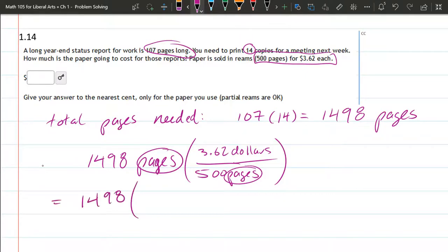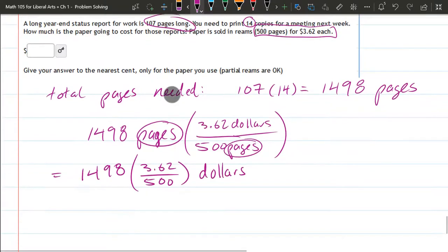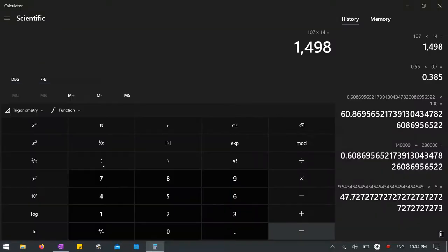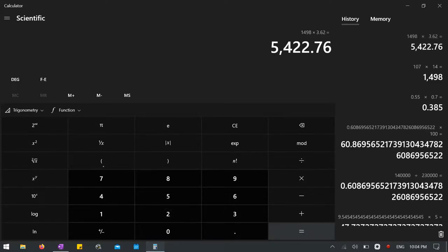Okay, 1498 times, pages cancel. I'll just write dollars at the end. Okay, so let's go ahead and do this multiplication. You're going to multiply the numerators and then divide by the 500. So that's 1498 times 3.62. It's already in my calculator. Times 3.62. There we go. And the second thing was divide by 500.